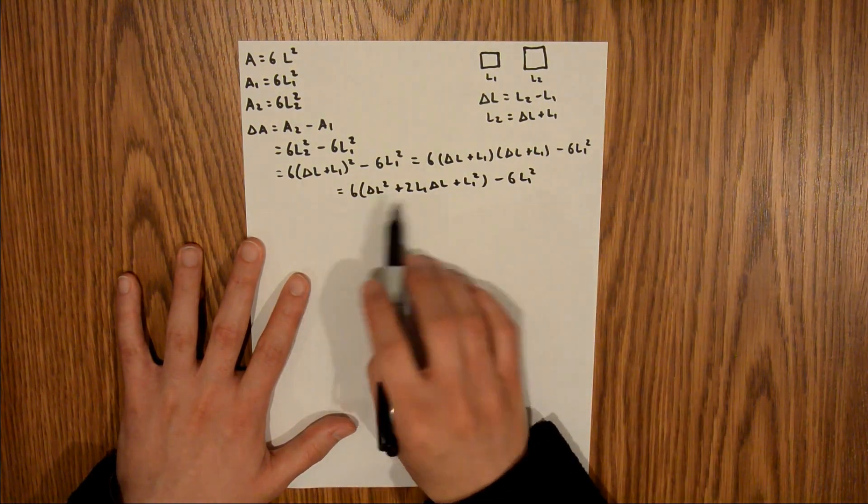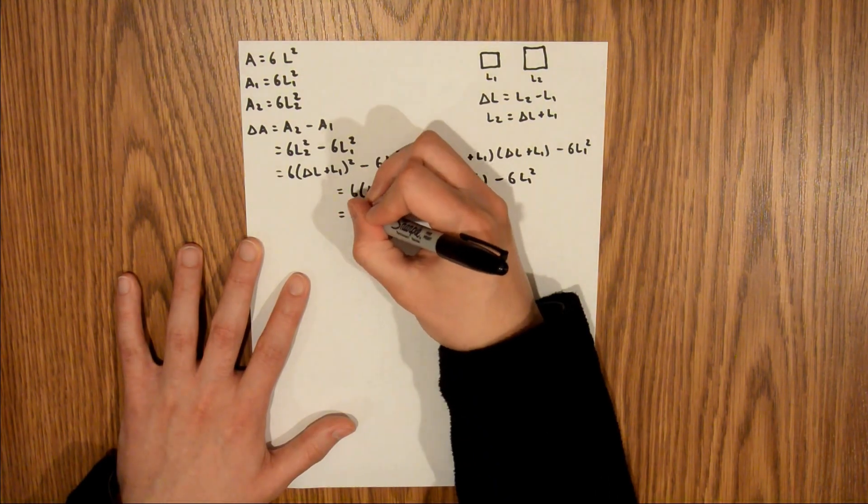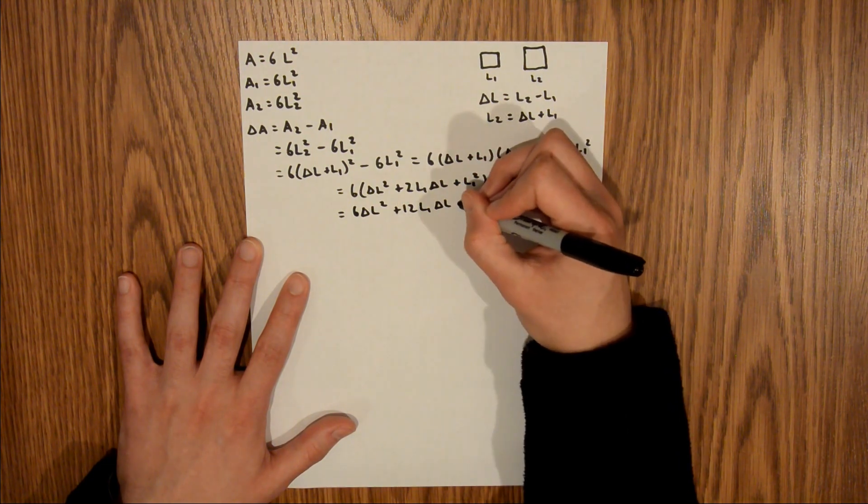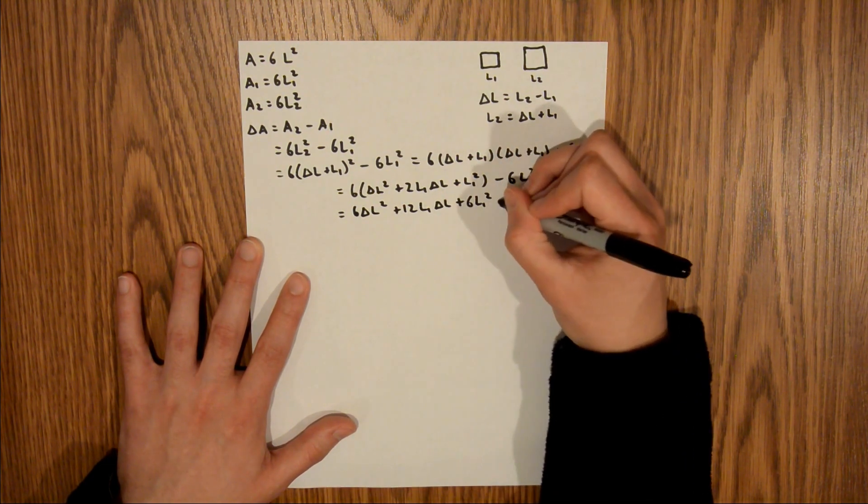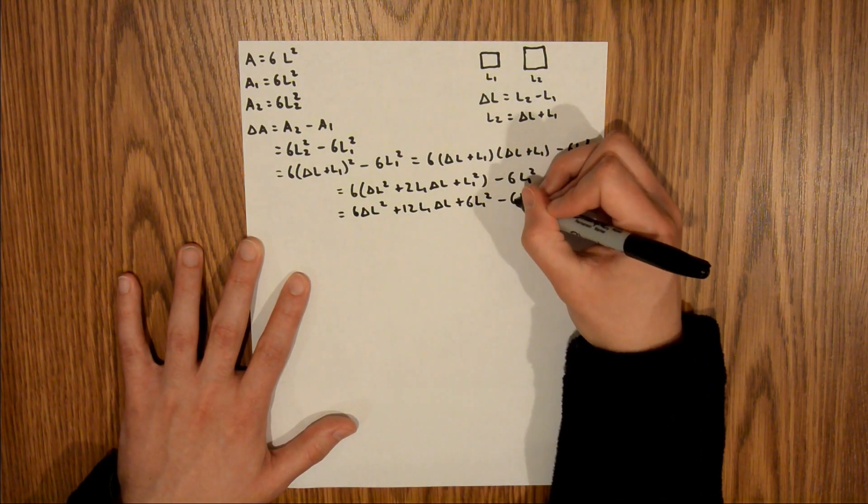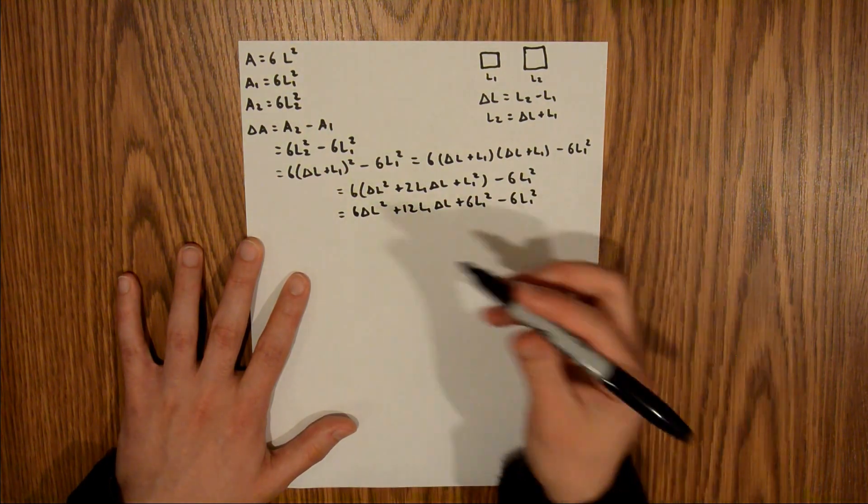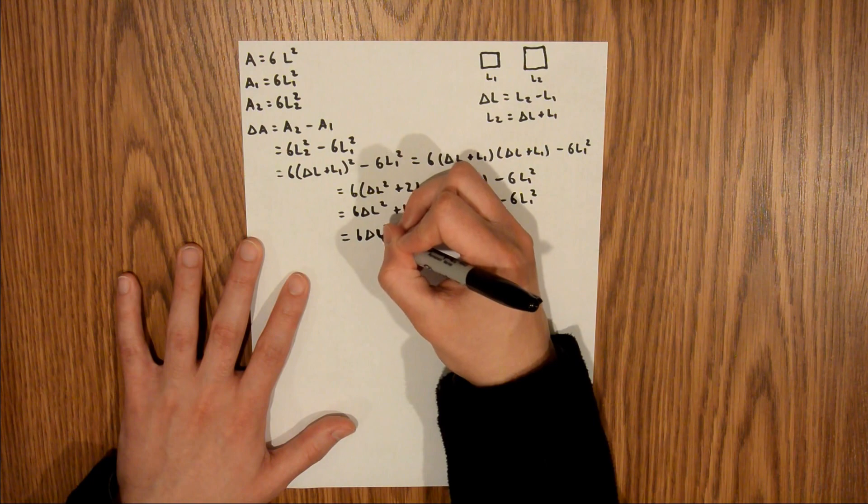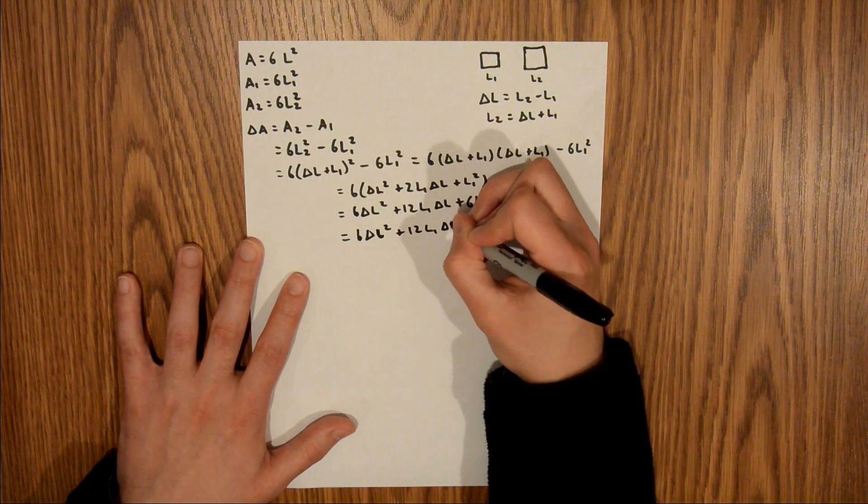And now I'm going to distribute this six out. And that's going to be six delta L squared, plus 12 L1 delta L, plus six L1 squared, minus six L1 squared. So these two terms are going to drop out. And we're going to be left with six delta L squared, plus 12 L1 delta L.